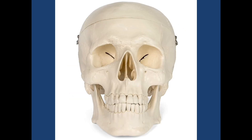Looking at it from the front: the ophthalmic artery gives the posterior and anterior ethmoidal, the supraorbital, the supratrochlear, and the dorsal nasal branch medially. On the lateral side, there is the lacrimal branch, the zygomaticotemporal branch, and the zygomaticofacial branch — all from the ophthalmic artery, all from the internal carotid.